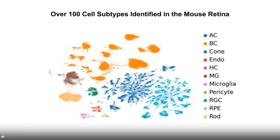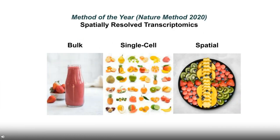Single-cell technology is really wonderful — for the first time, we can identify all the subtypes. However, what's missing is the spatial information. Just like thinking of the retina as a nicely arranged food tray: from bulk sequencing we get a smoothie; from single-cell we can find all the cell types and their proportions. However, what's missing is the spatial information, which is very critical for us to understand the function of the retina.